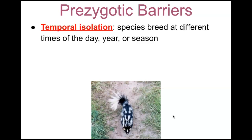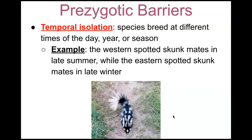Another example is temporal isolation. Temporal isolation is when species breed at different times of the day, year, or season — whether it be winter, summer, fall, or spring. An example: the western spotted skunk mates in late summer while the eastern spotted skunk mates in late winter. You can see temporal isolation there in the particular season of the year during which these organisms mate.